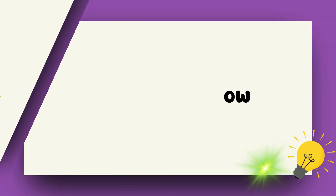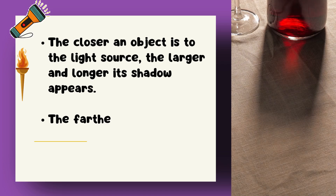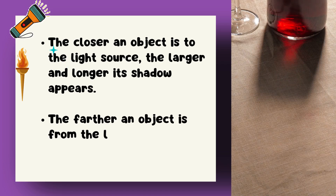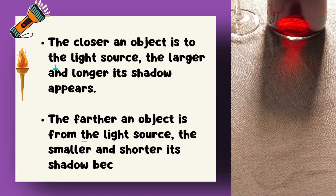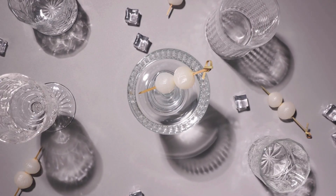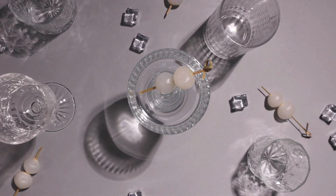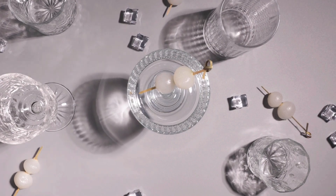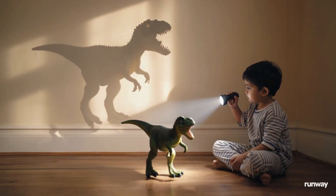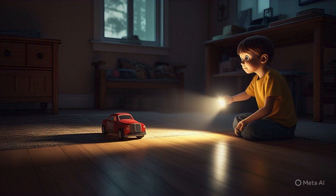Have you observed that when you move closer to the light, your shadow gets bigger? And when you move farther from the light source, your shadow gets smaller. Why? Because more light is blocked when you place an object closer to the light, so the shadow gets bigger. On the other hand, light spreads out as it travels, so an object far away will block less light, making a smaller shadow. Try this at home — use a flashlight and a toy to make shadows, move the toy around, and see how the shadow changes.